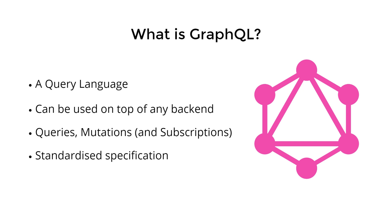When using GraphQL, whether reading or writing data, we always send a POST request with a body that contains information about what type of data we want to get back or save to the database. GraphQL reduces the amount of information developers need to learn to consume an API by having one main endpoint, fewer operations, and self-documenting APIs.